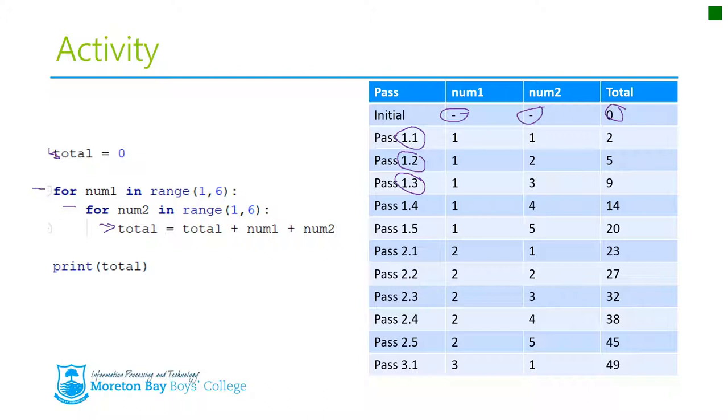Now we come to the end of this loop, end of this loop here, and we come back to this for loop, the inside for loop. So at 1.2 at this stage, num2's increased, num1 hasn't. So it's pass 1.2.